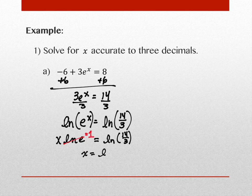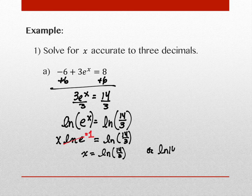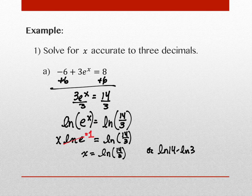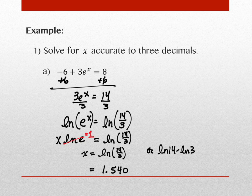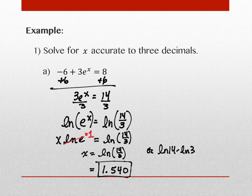So we've solved for x: the exact expression is ln(14/3), or equivalently ln(14) − ln(3). The directions want three decimal places, so grab your calculator and compute ln(14/3). To three decimals, you get 1.540. Thank you for noting we need to write the zero — if it says three decimal places and the last digit is zero, you still write it.